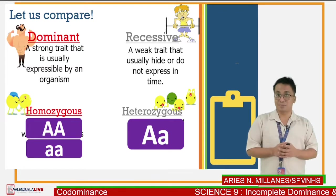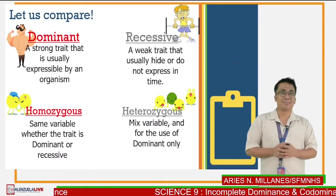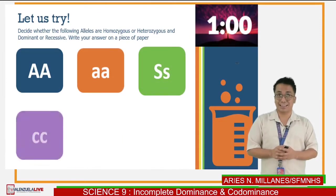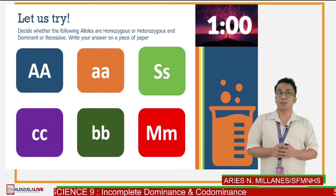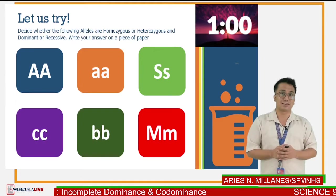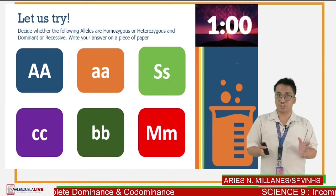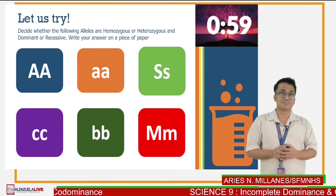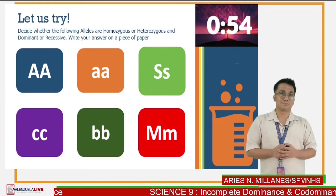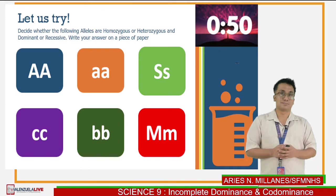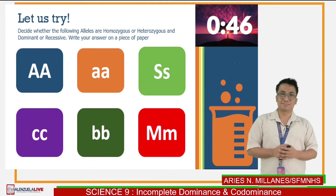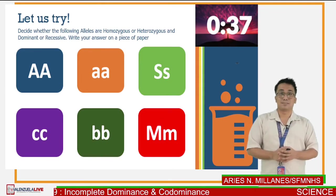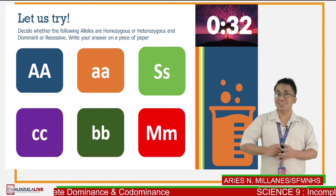Did you notice the differences? Very good. Now, grab your pen and paper and try to answer the following. You have one minute to answer six items. Your task is to decide whether the following are dominant or recessive, and homozygous or heterozygous. Write your answer on your answer sheet, then take a picture of it, just in case your subject teacher wants to see your activity for today. Time starts now!